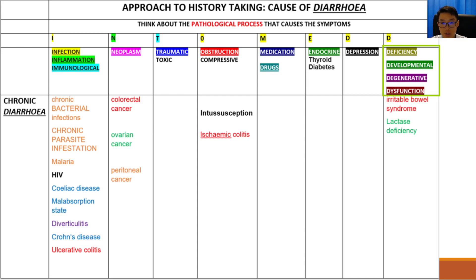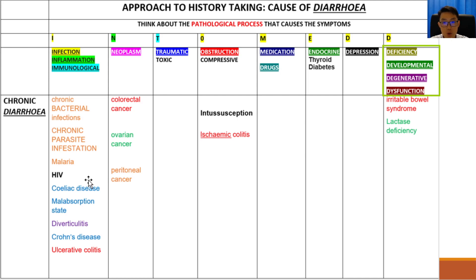The next table shows causes of chronic diarrhea. In the same way that many bacteria and parasites can cause acute diarrhea, persisting infection with these bacteria and parasites can cause chronic diarrhea too. Other infections such as malaria and HIV can also cause chronic diarrhea. Immune conditions such as Celiac disease are known to cause diarrhea and weight loss due to malabsorption, whereas inflammatory conditions such as diverticulitis, Crohn's disease, and ulcerative colitis can also cause diarrhea and may be associated with bloody diarrhea.